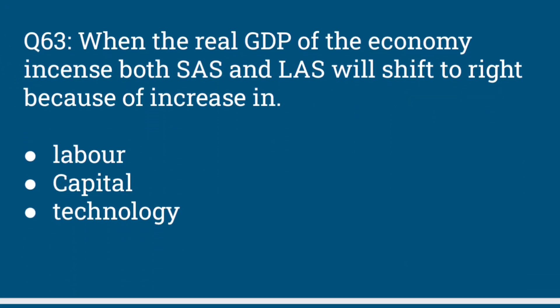The potential level of GDP represents full employment of labor, capital, and technology. When the real GDP of the economy increases, both short-run aggregate supply and long-run aggregate supply will shift to the right because of increases in labor, capital, and technology.